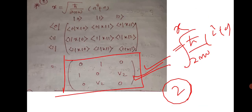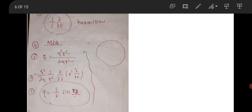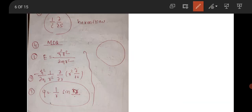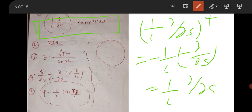This question was also for two marks. The next question is from quantum mechanics: which of the options is the Hermitian operator? (1/i)(d/ds) will be the Hermitian operator because if you take the dagger of this operator it becomes (−1/i)(−d/ds), which is again (1/i)(d/ds). So this is the Hermitian operator.